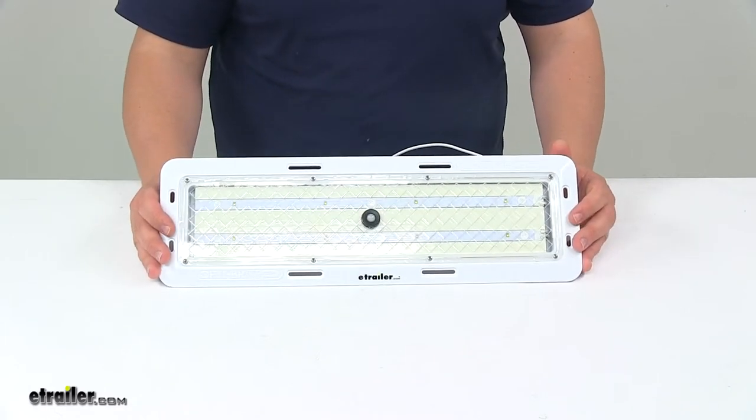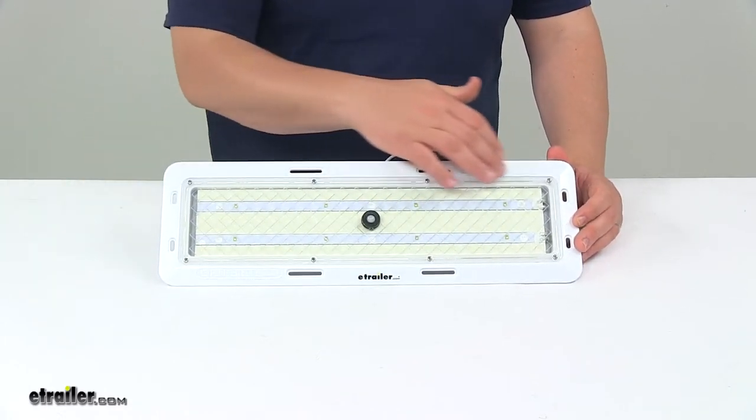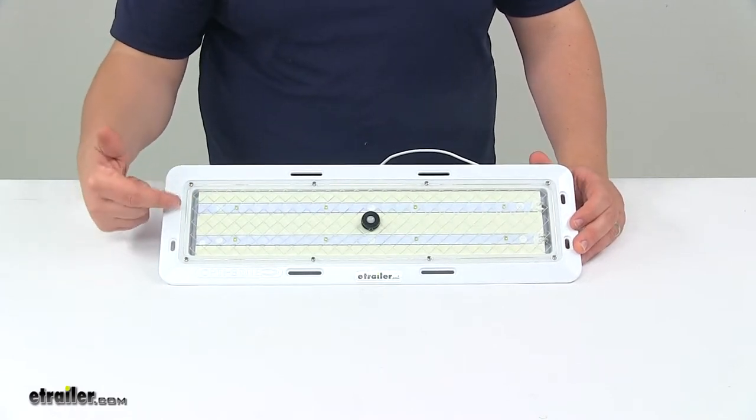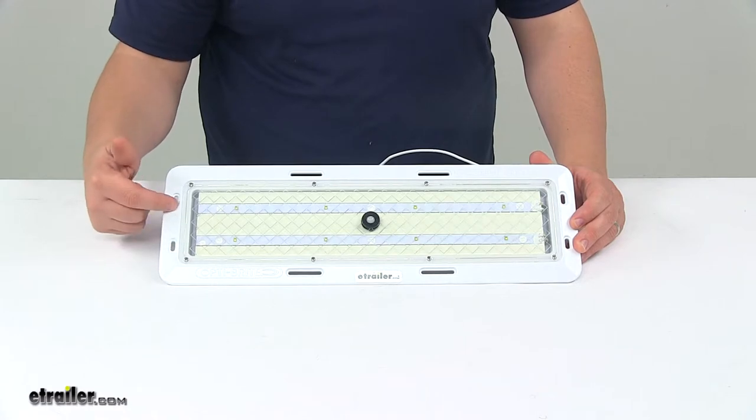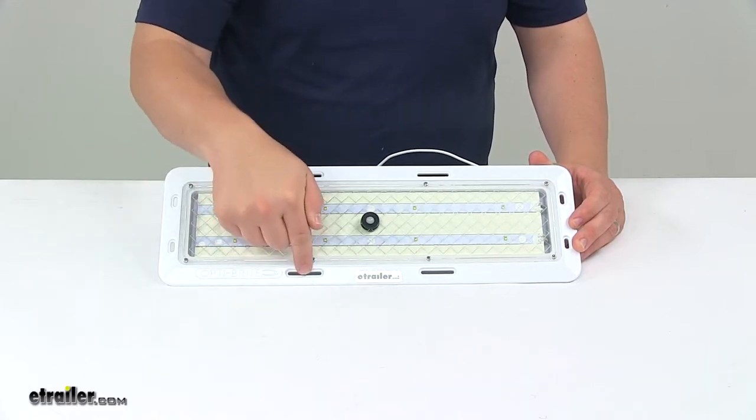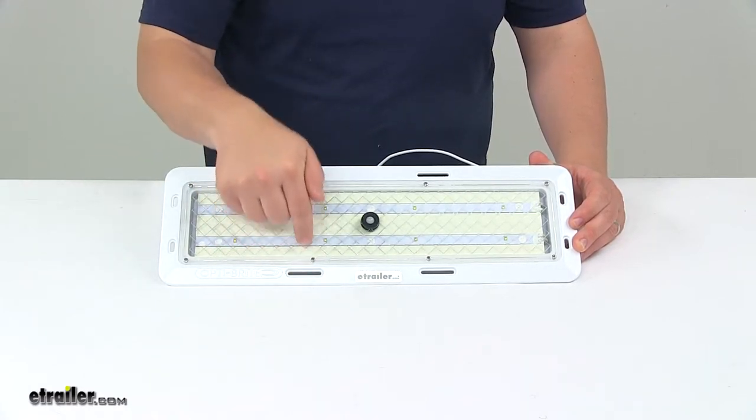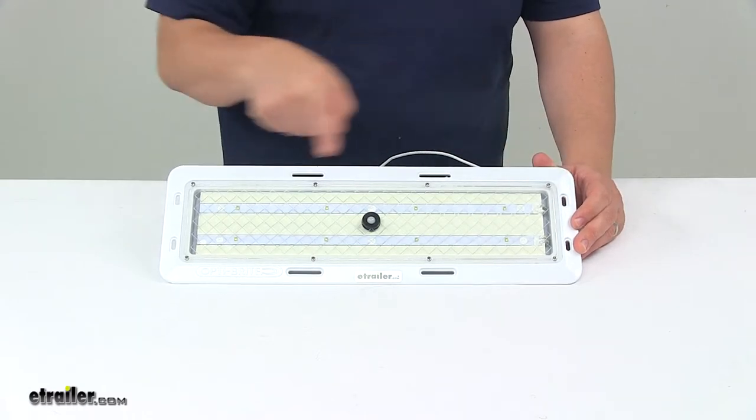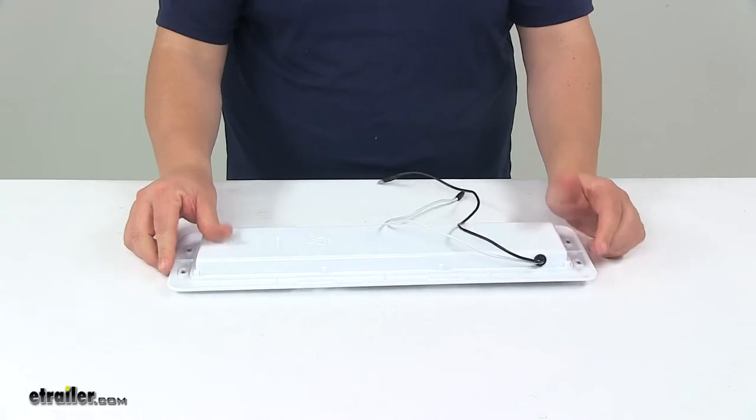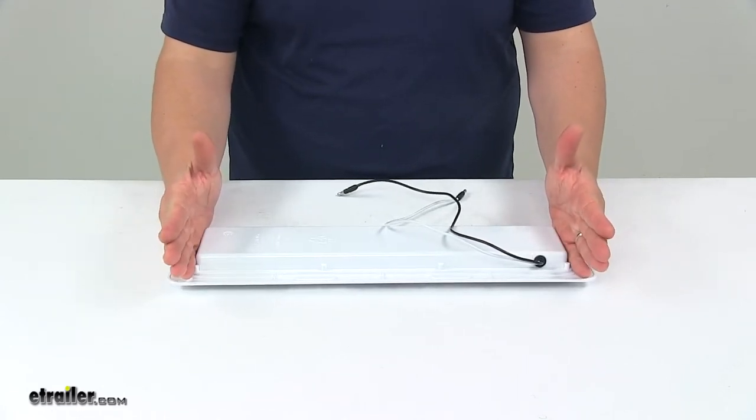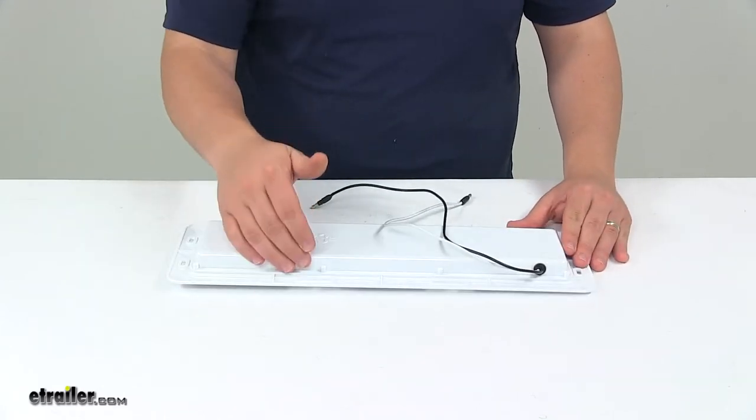The mount holes on the unit, you can see that you have numerous mount holes around the perimeter of the light. These holes are separated on center by two and three-sixteenths inches. These are separated on center by four and three-quarter inches. And then this set to this set on center is seventeen and one-eighth inches. Your cutout needs to measure around sixteen and a half inches long by four inches wide.